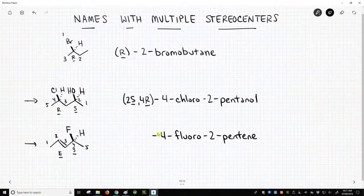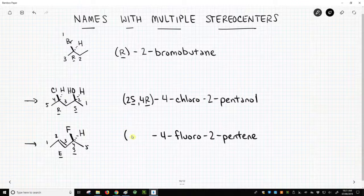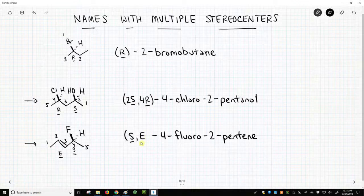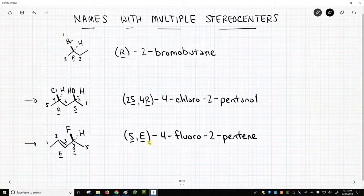And now out on front, we're going to put our modifiers. Now the R and S modifiers always come first. So this is going to be S, E, and both those are underlined because they are italicized. So this would be (S,E)-4-fluoro-2-pentene.